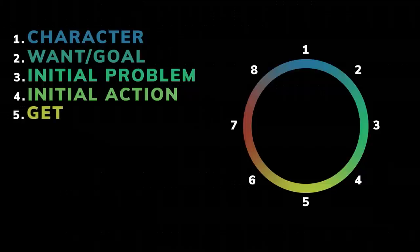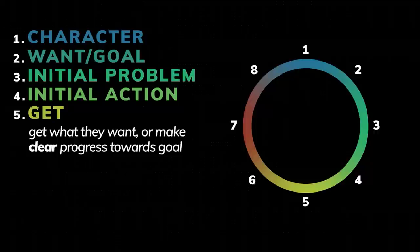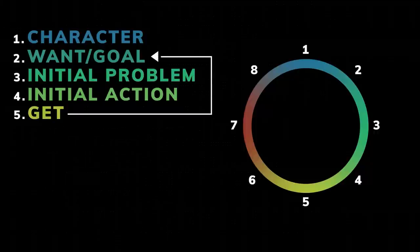Five: get. This one trips people up. Your character should attain their want in some way — either they fully get what they want, or they make clear progress towards getting it. The two and the five are linked. When trying to identify what should happen at your five, return to your two and ask yourself how you can show the audience that the character has made progress towards the want.